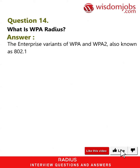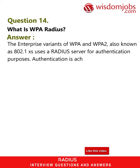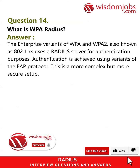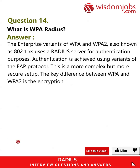Question 14: What is WPA RADIUS? The enterprise variants of WPA and WPA2, also known as 802.1x, use a RADIUS server for authentication purposes. Authentication is achieved using variants of the EAP protocol. This is a more complex but more secure setup. The key difference between WPA and WPA2 is the encryption protocol used.